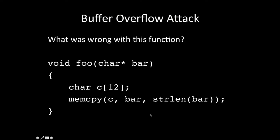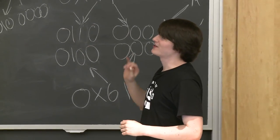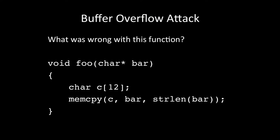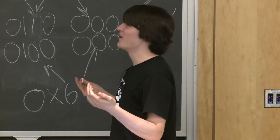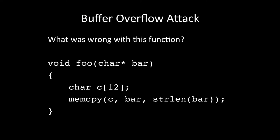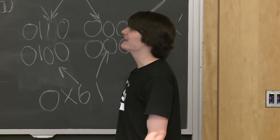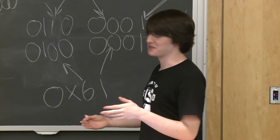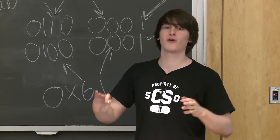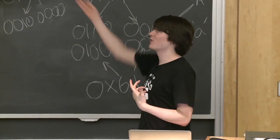Buffer overflow attacks: the problem with this function is that we declare an array of 12 chars, then use memcpy to copy the entire string 'bar' into that 12-char buffer. If bar happens to be more than 12 characters — or millions of characters — C doesn't care. It will completely overwrite the 12 bytes allocated for the buffer and everything past it in memory that doesn't actually belong to that buffer.